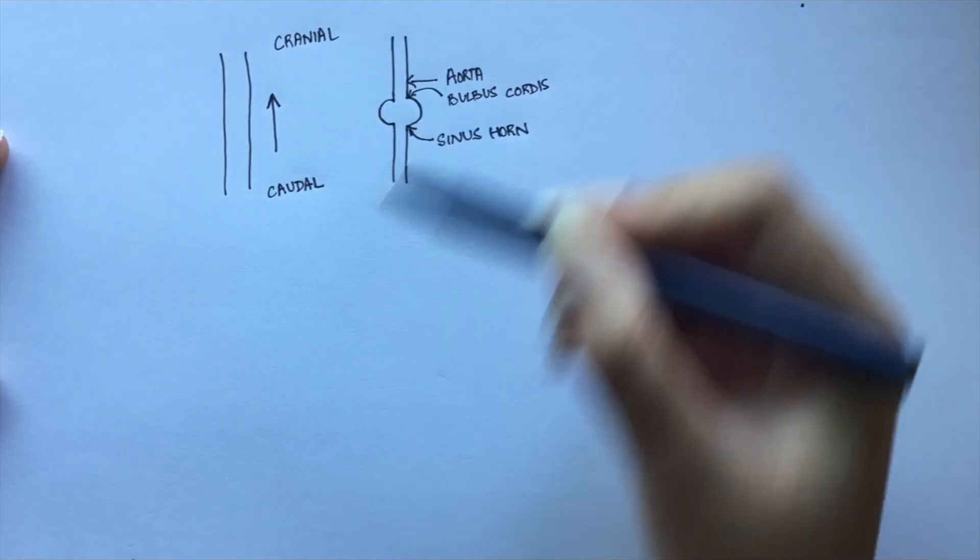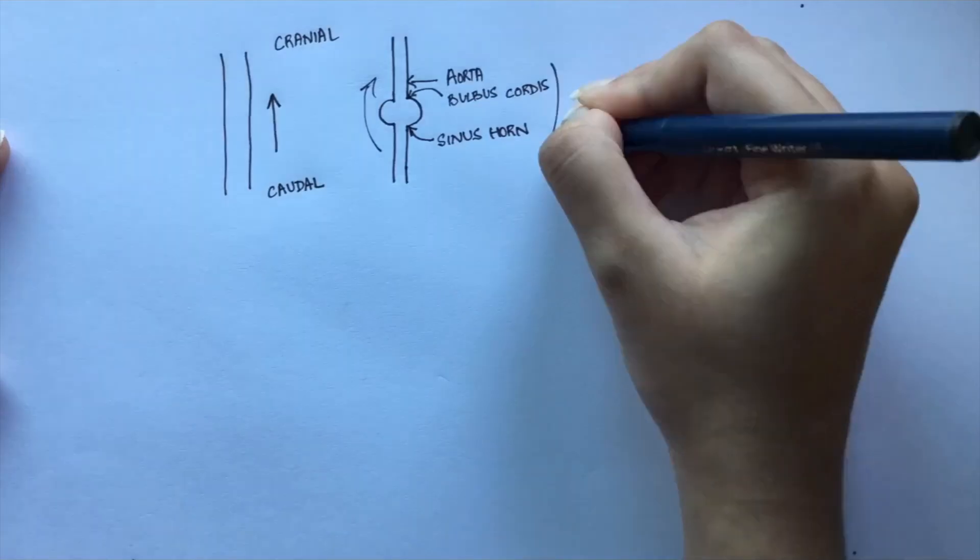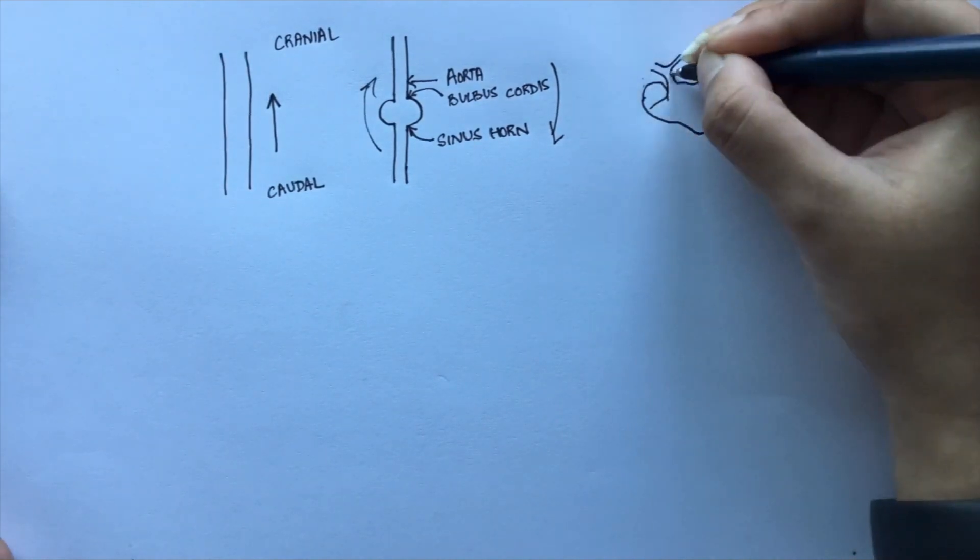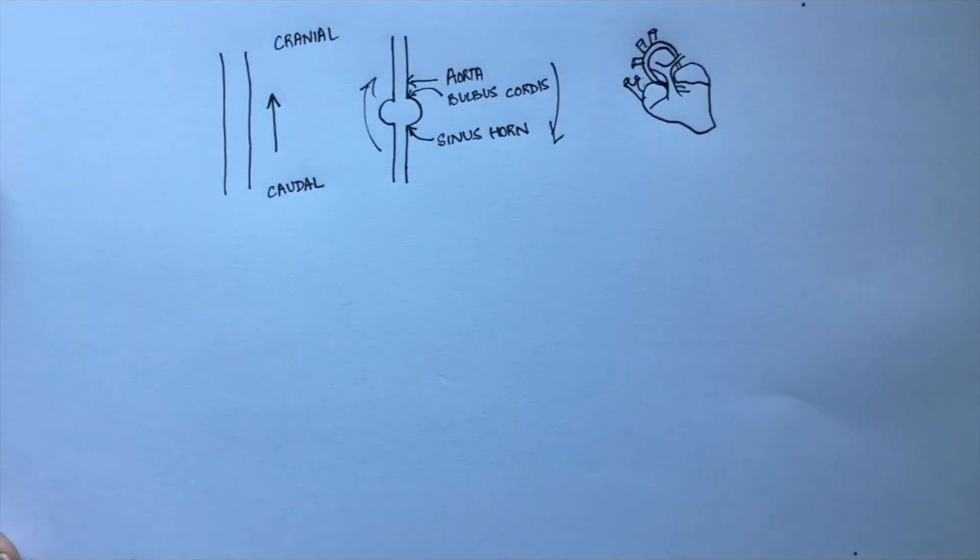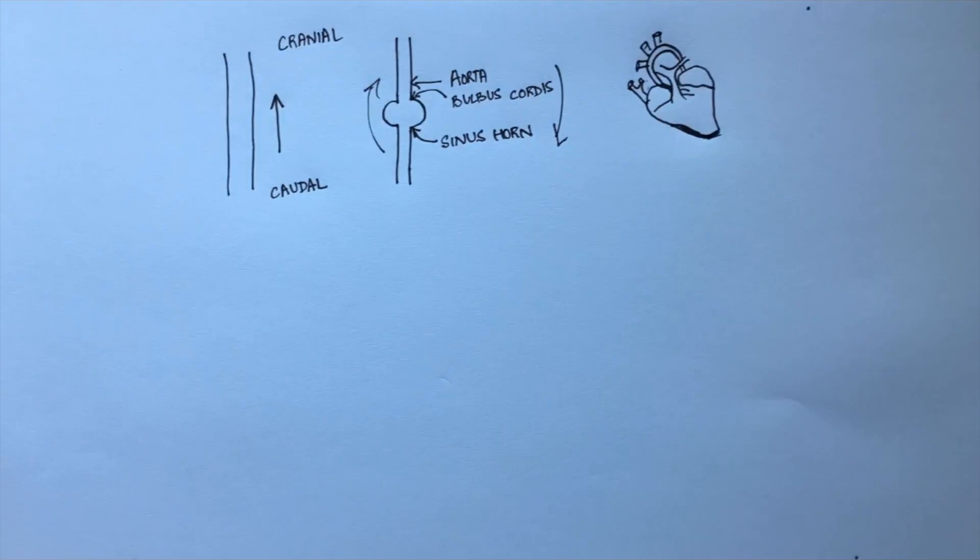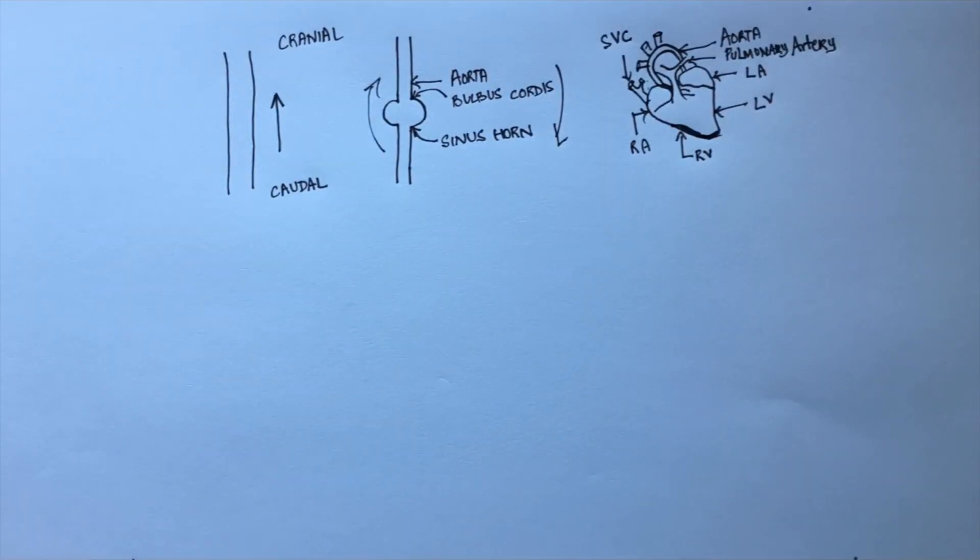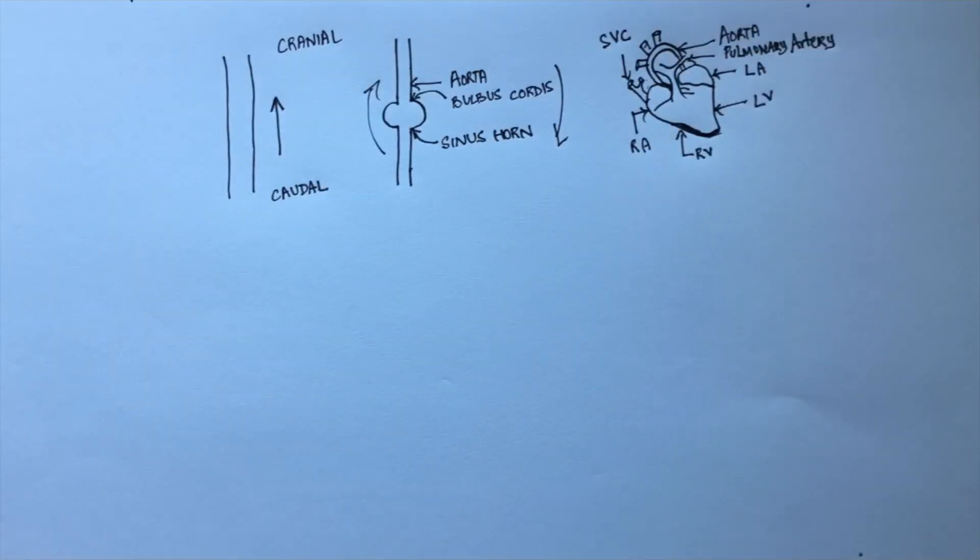This region undergoes rotation to ultimately give rise to the four chambers of the heart. The heart starts beating by week 4 of development, making it the first functional organ to be formed in the fetus.